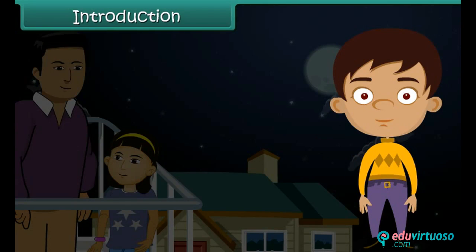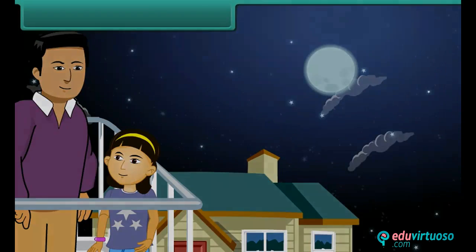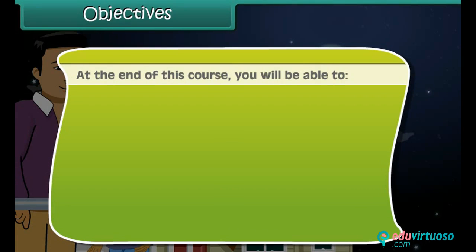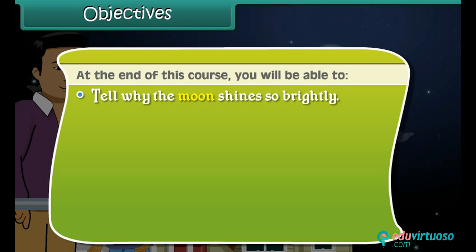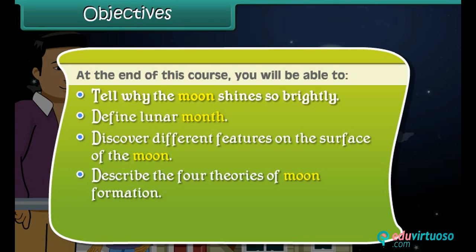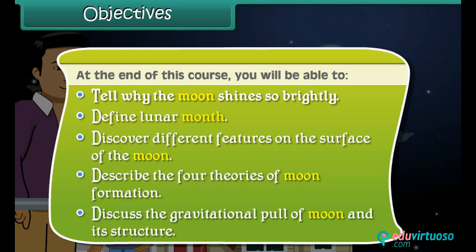In this lesson we will learn about the moon. The objectives are: at the end of this course you will be able to tell why the moon shines so brightly, define the lunar month, discover different features on the surface of the moon, describe the four theories of moon formation, and discuss the gravitational pull of the moon and its structure.